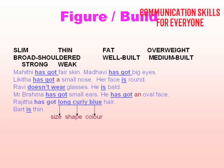For example: Mighty has got fair skin, Moesha has got big eyes, Likita has got a small nose, her face is round, Mr. Grandma has got small ears, he has got an old face, Rajita has got long curly hair. When using adjectives, follow the order: size, then shape, then color.